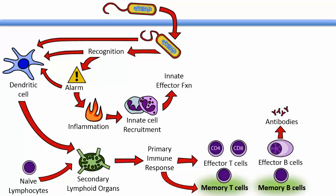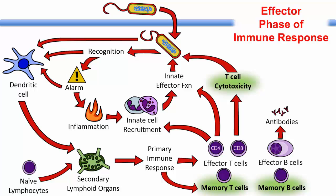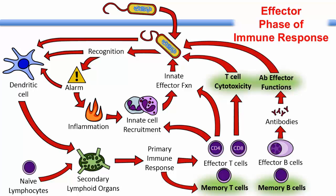Once you have generated all these effector cells, it is time for them to do something. This can be immediate or upon re-exposure to the pathogen. The action of effector cells is known as the effector phase of the immune response. This includes CD4 cells migrating to tissue and stimulating additional innate cell recruitment and helping innate effector cells. It includes CD8 cells migrating to tissue and killing infected cells, and antibodies performing the functions previously discussed.